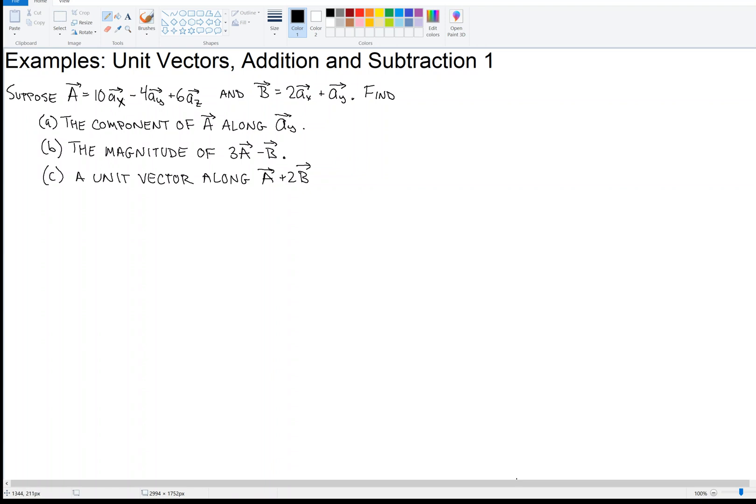Before we get to the actual problem, let's first discuss what it is exactly that these things mean. So vector A is 10 times a unit vector in the X direction, i.e. 10 units down X axis. And then minus 4 times the unit vector in the Y direction, so minus 4, so 4 down the negative Y axis. And then plus 6 times the unit vector in the Z direction.